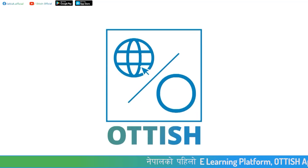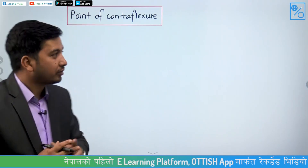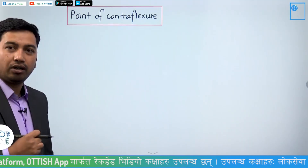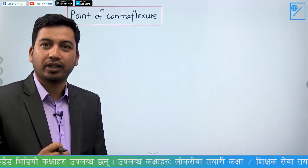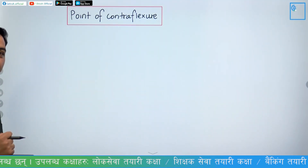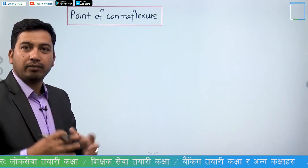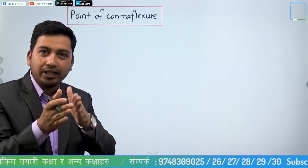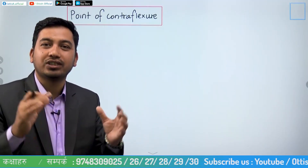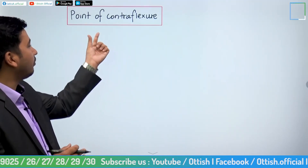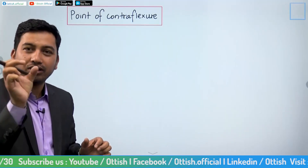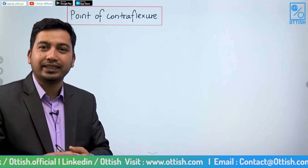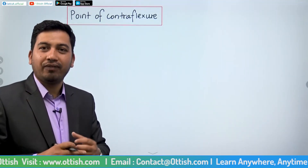Welcome to Otis.com. Today in Mechanics of Structures, I am going to discuss the Point of Contraflexure. Contra means opposite, and flexure refers to bending moment. The point of contraflexure is a point where the bending moment changes sign — if there is a sign change, that point is called the Point of Contraflexure.